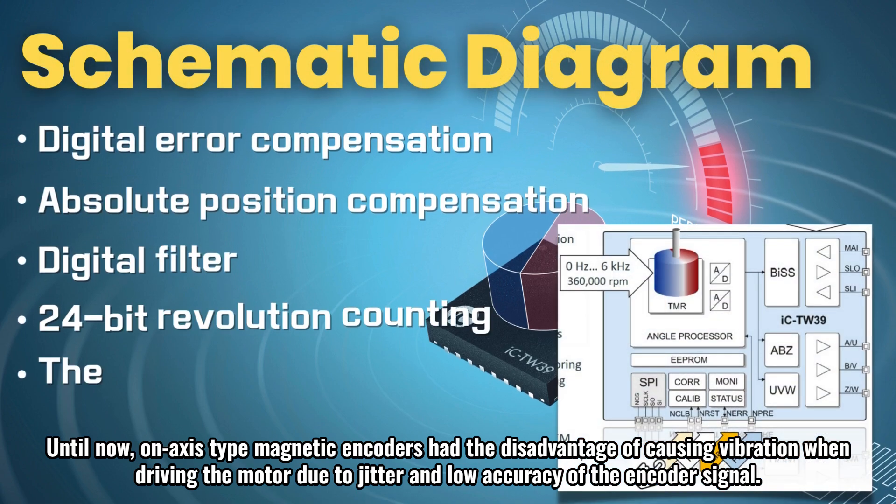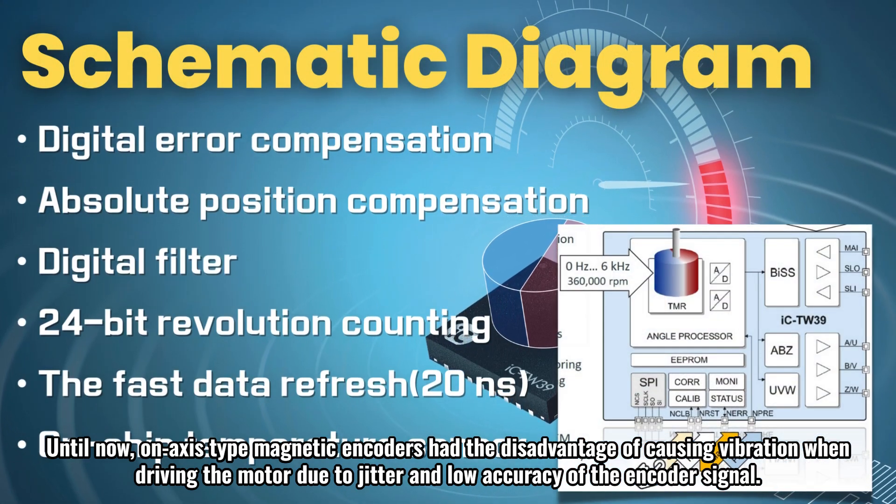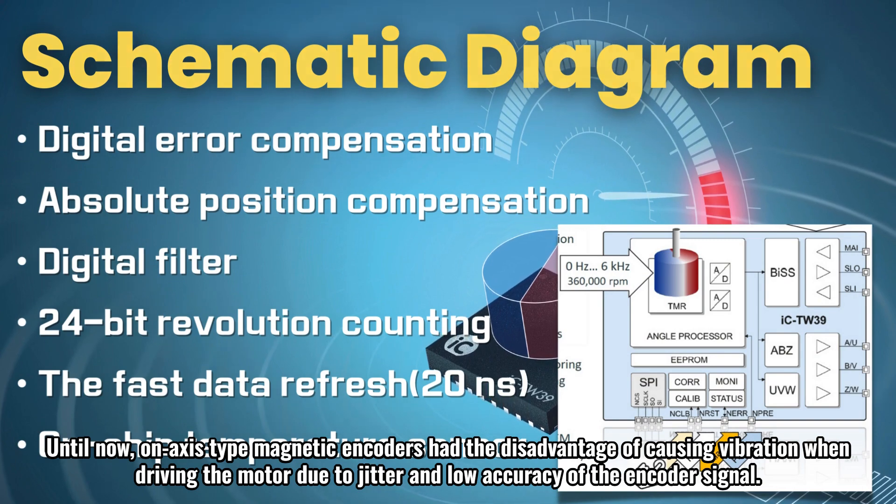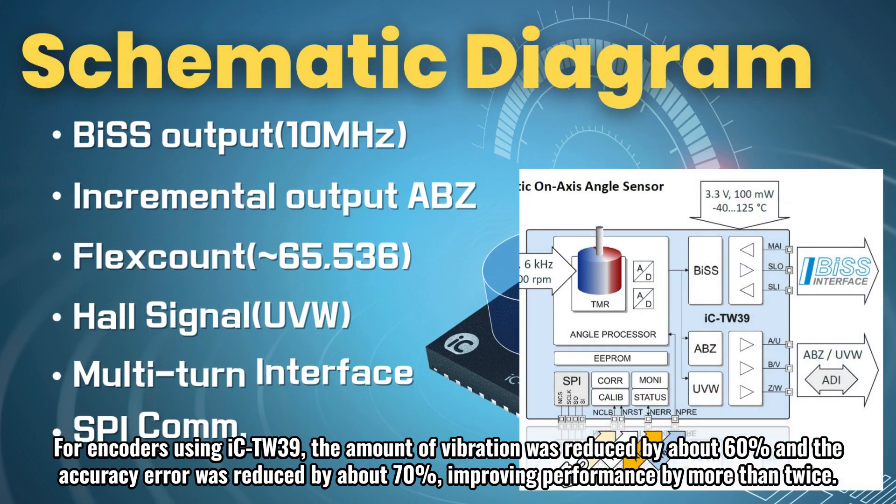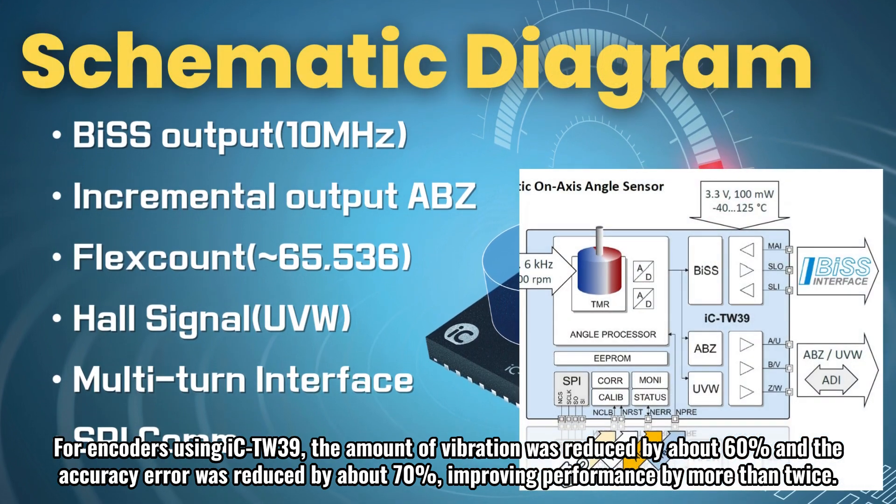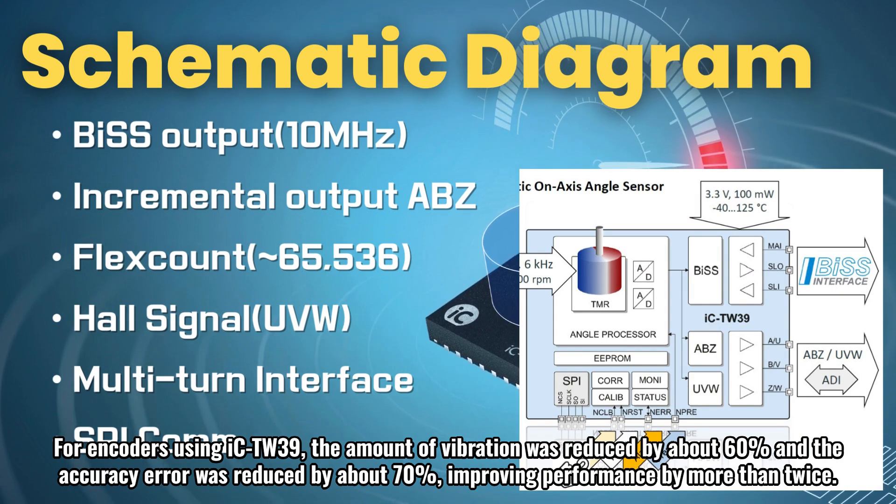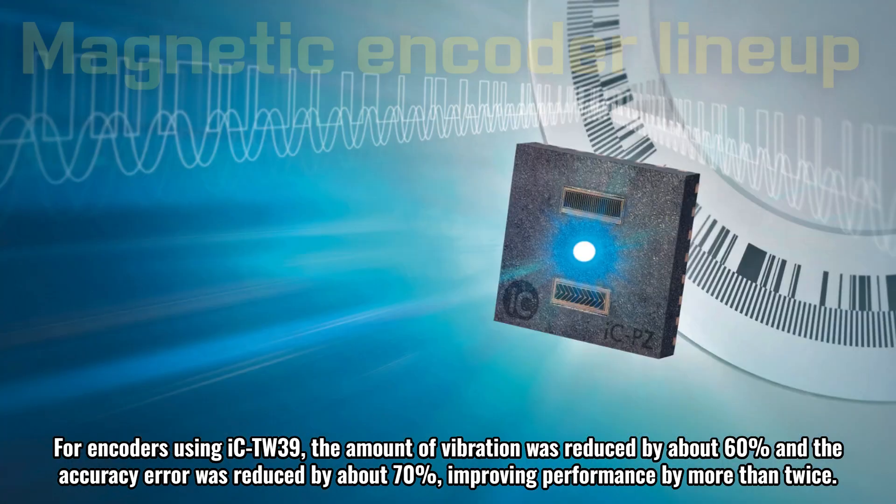Until now, on-axis type magnetic encoders have the disadvantage of causing vibration when driving the motor due to jitter and low accuracy of the encoder signal. For encoders using ICTW39, the amount of vibration was reduced by about 60% and the accuracy error was reduced by about 70%, improving performance by more than twice.